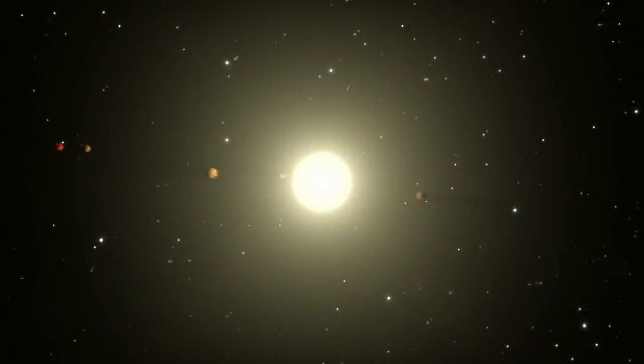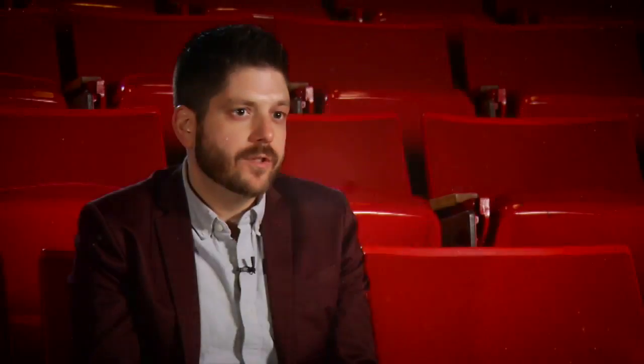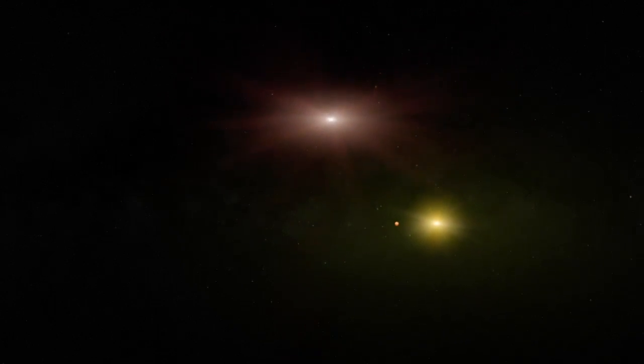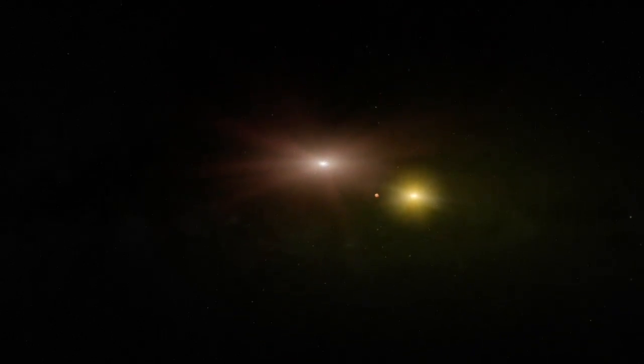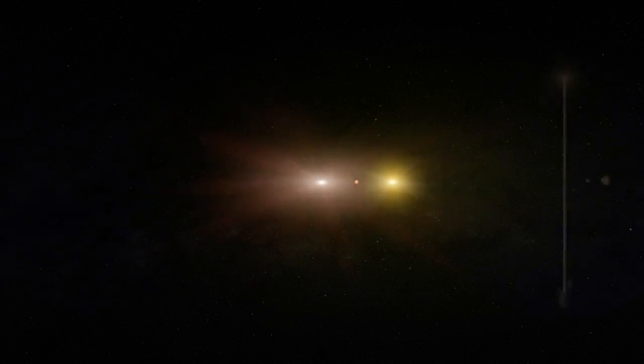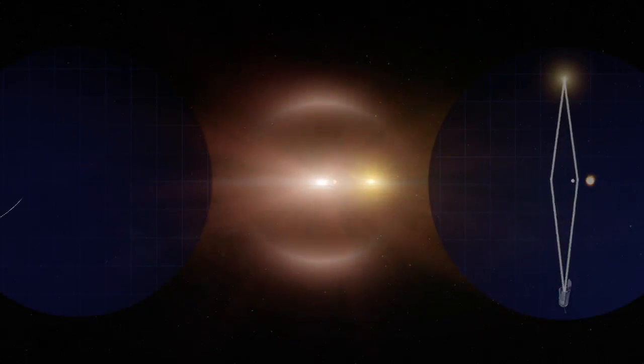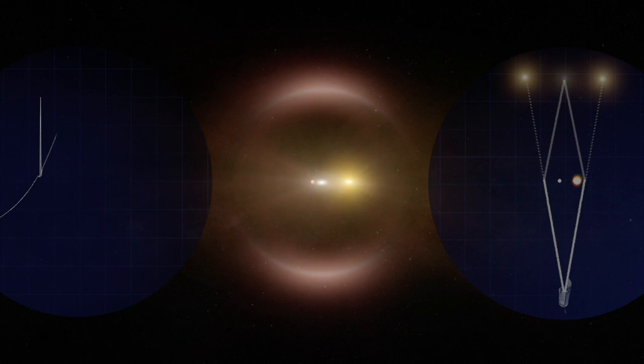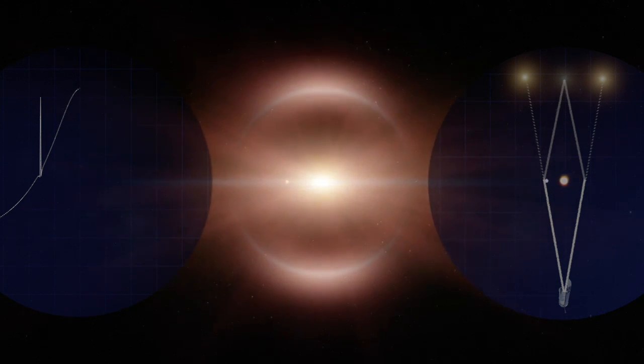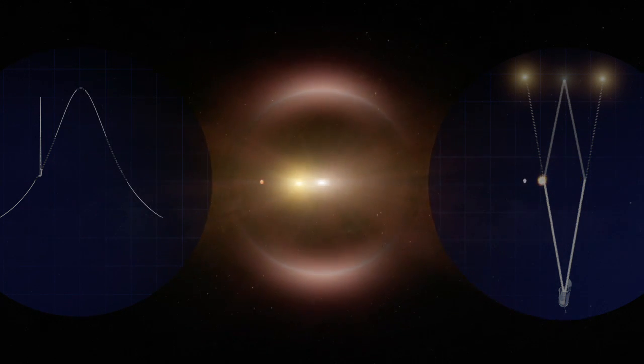The particular thing I'm interested in using WFIRST for is to actually do a statistical census of planetary systems in our galaxy. And what we're looking for is gravitational microlensing events. These are cases when another star passes in front of our line of sight to a background star, and it makes that background star get a little bit brighter due to the gravity of that foreground star. And that allows us to find planets.